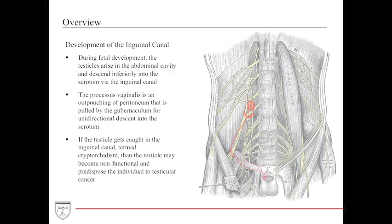If the testicle gets caught in the inguinal canal, which is called cryptorchidism, the testicle may become non-functional and even predispose the individual to testicular cancers such as seminomas.